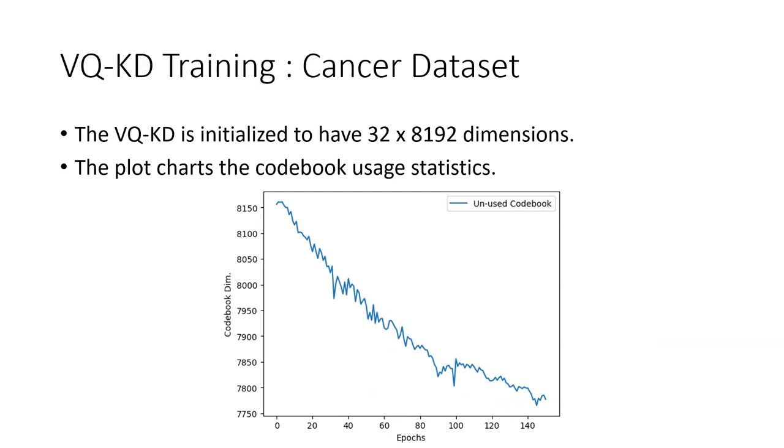Another important information to keep in mind is that VQ-KD has a codebook. The objective is to use as much of the codebook as possible. If you use the most amount of codebook that means you have captured the most amount of features from your images. This plot charts the codebook usage statistics. It was initialized with 8,192 dimensions and then after 140 epochs it reduced to 7,750 dimensions. It performs codebook collapse wherein it only uses the codebook which is initialized.